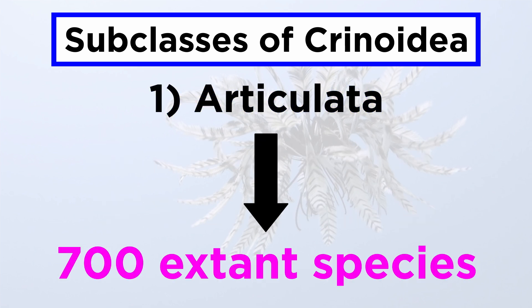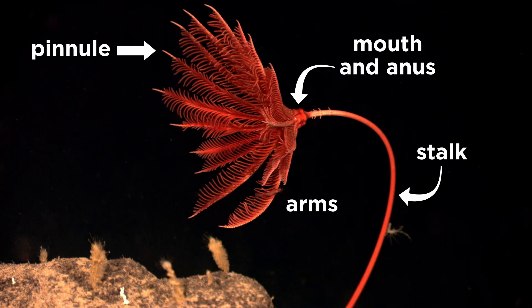Though there are only about 700 described species of extant crinoids, the class was once much more abundant and diverse. They are unique among the echinoderms in that their mouths are located on their upper surface, surrounded by feeding arms, and linked to a U-shaped digestive system with the anus located near the mouth on the oral disc. They still maintain the characteristic echinoderm five-fold symmetry, but the individual arms are often subdivided into ten or more.